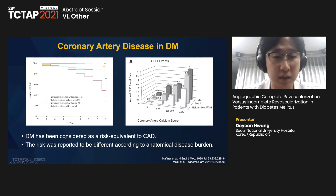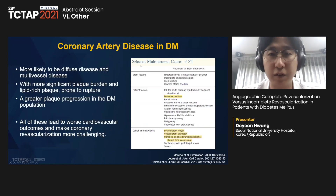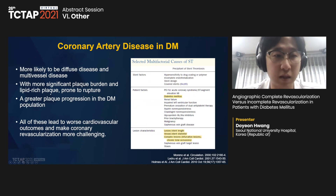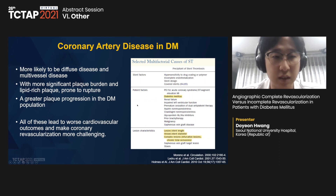Diabetes has been considered a risk equivalent to coronary artery disease, and the risk was reported to differ according to the anatomical disease burden. Coronary artery disease in diabetes is more likely to present as diffuse disease, multi-vessel disease, and more significant plaque burden with lipid-rich plaque. Previous studies reported greater plaque progression in diabetic patients. Additionally, diabetes is one of the strongest predictors of stent thrombosis, all of which leads to worse cardiovascular outcomes and makes coronary revascularization more challenging in diabetic patients.